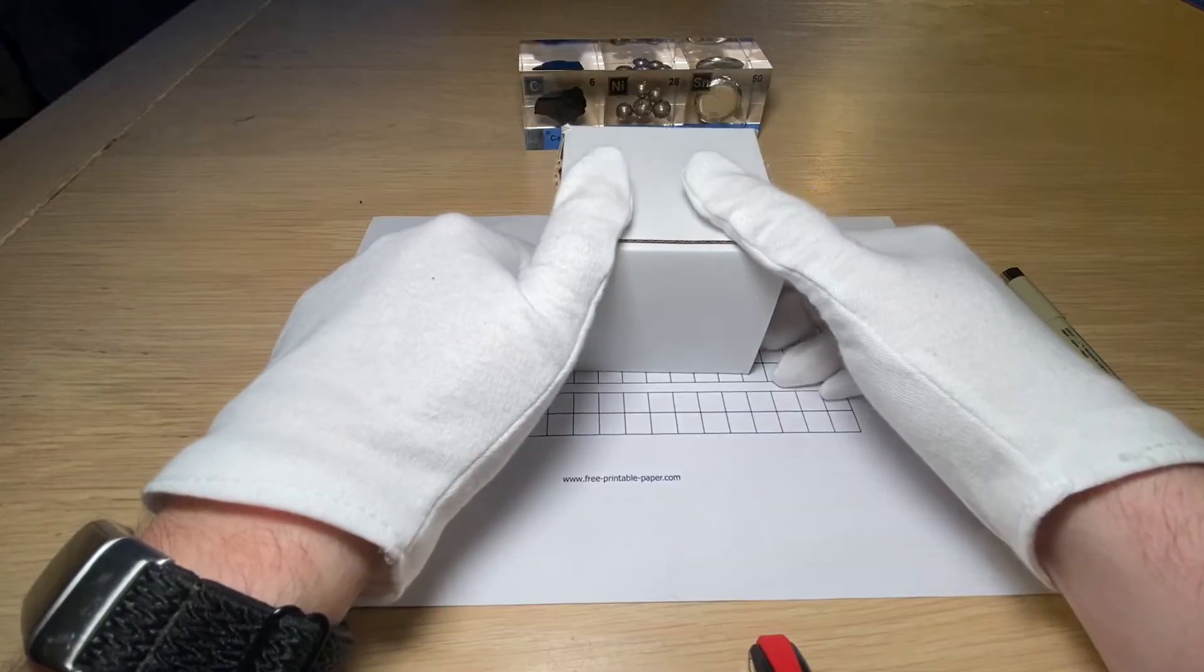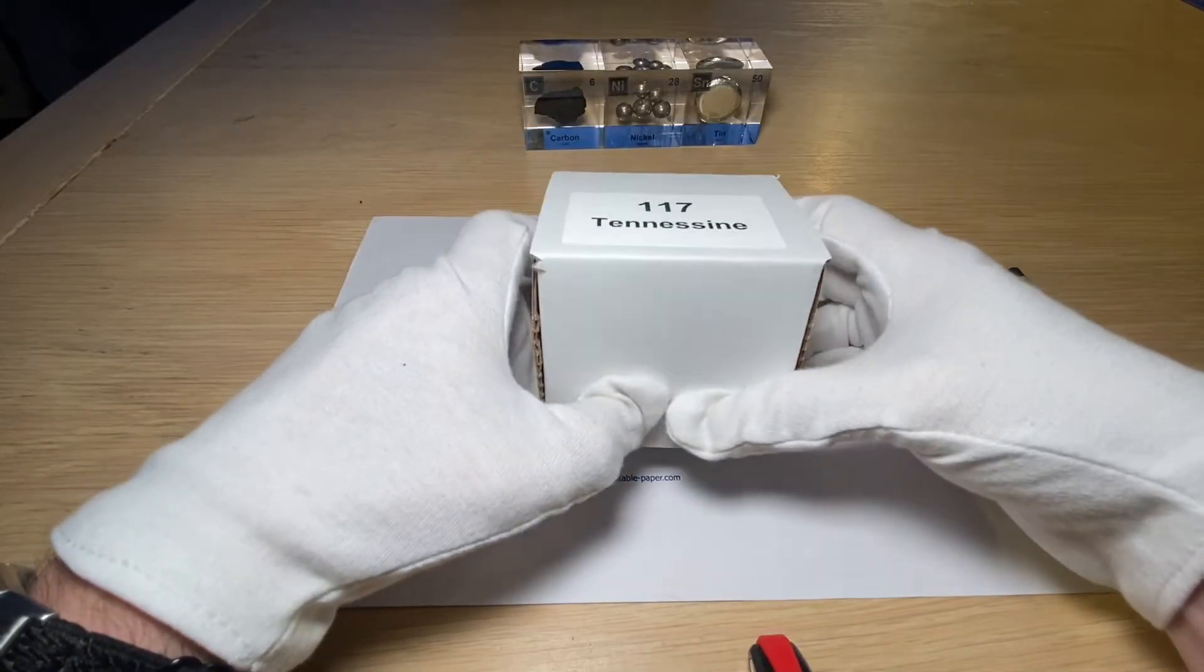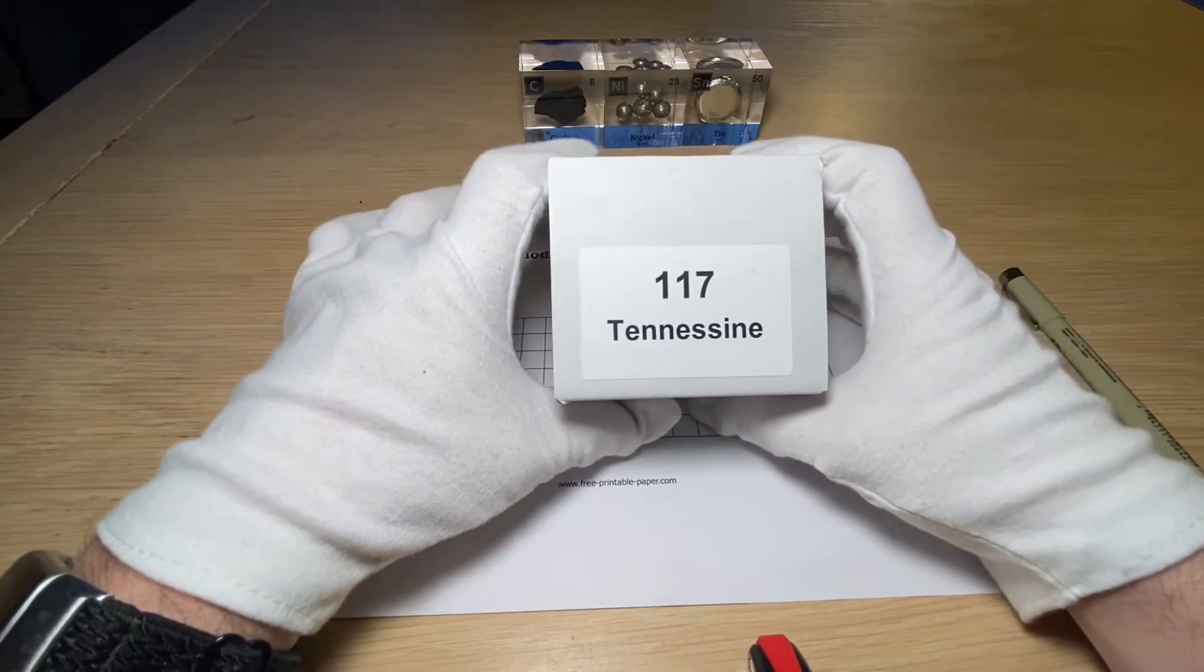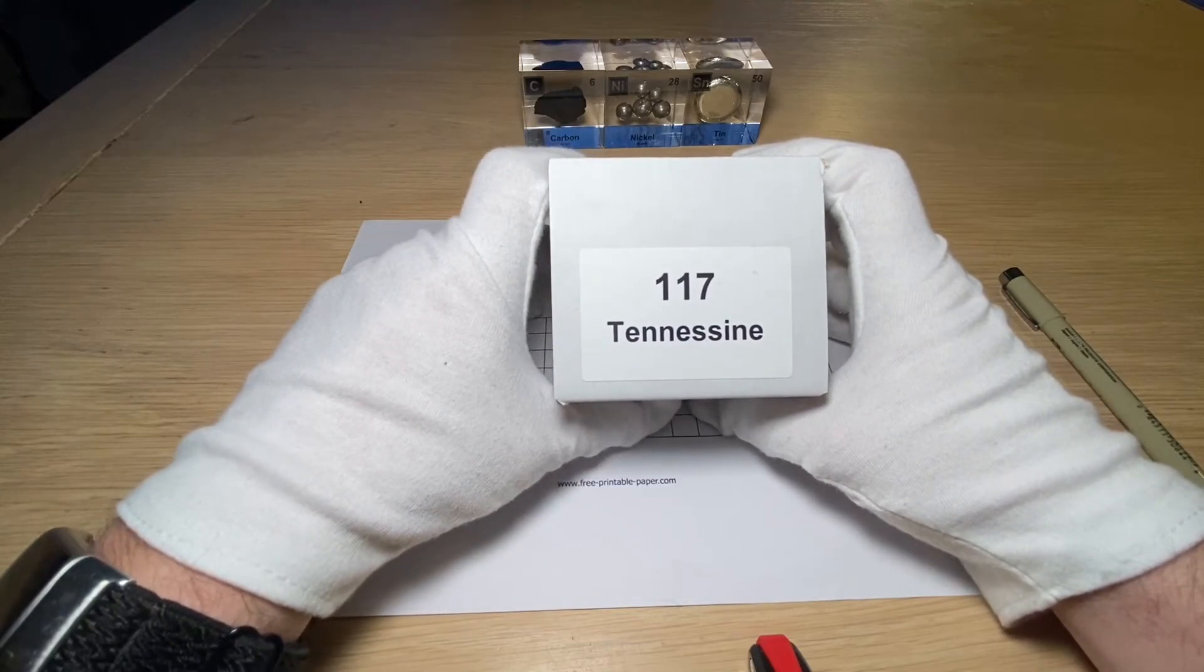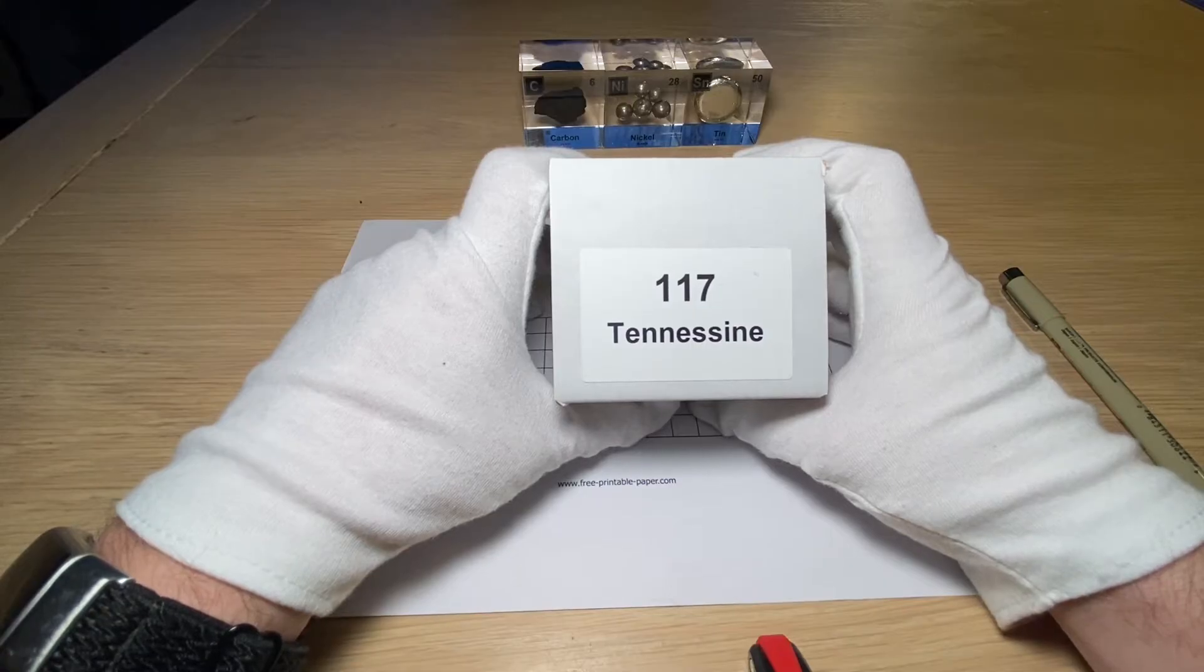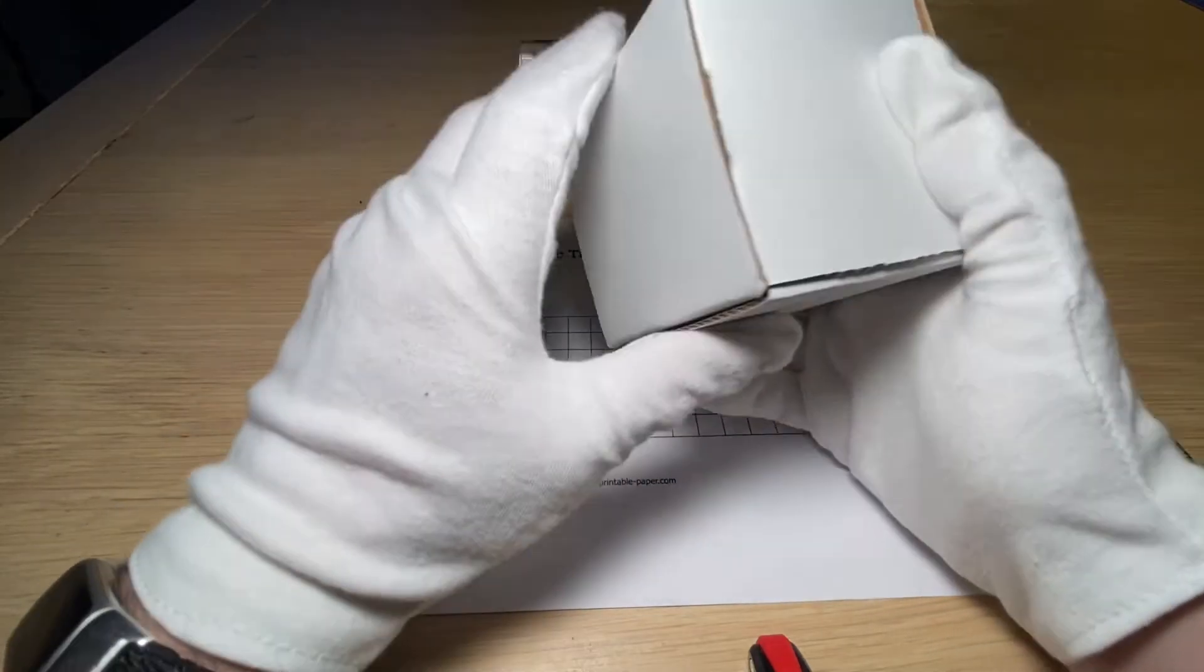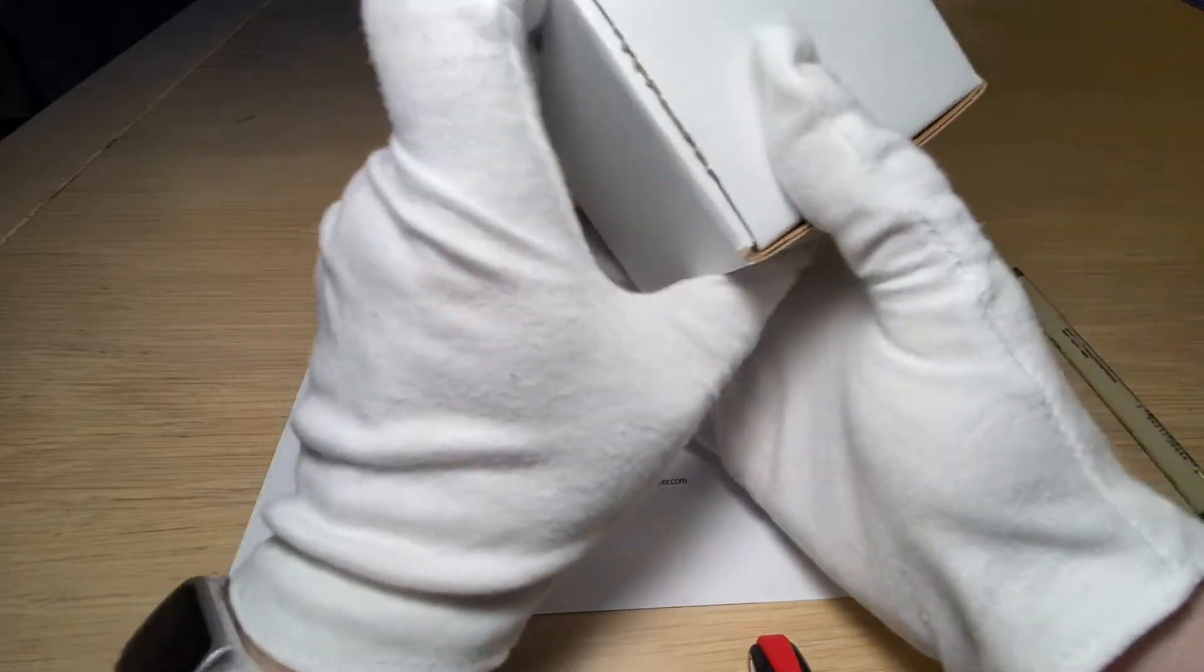So today we're going to talk about element number 117, which is called Tennessine, and it also rhymes. Tennessine is unfortunately a very boring element, so let's take a look at why it is that boring.